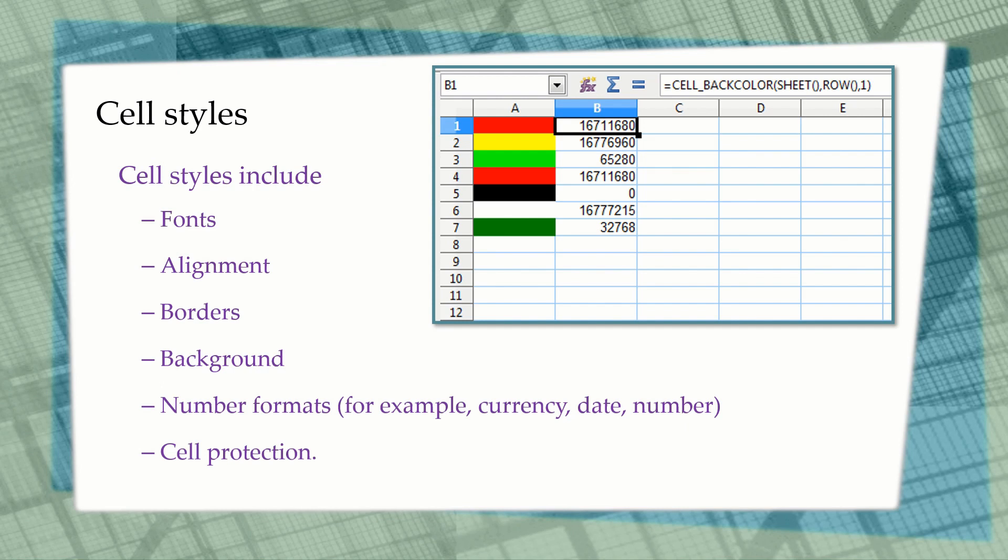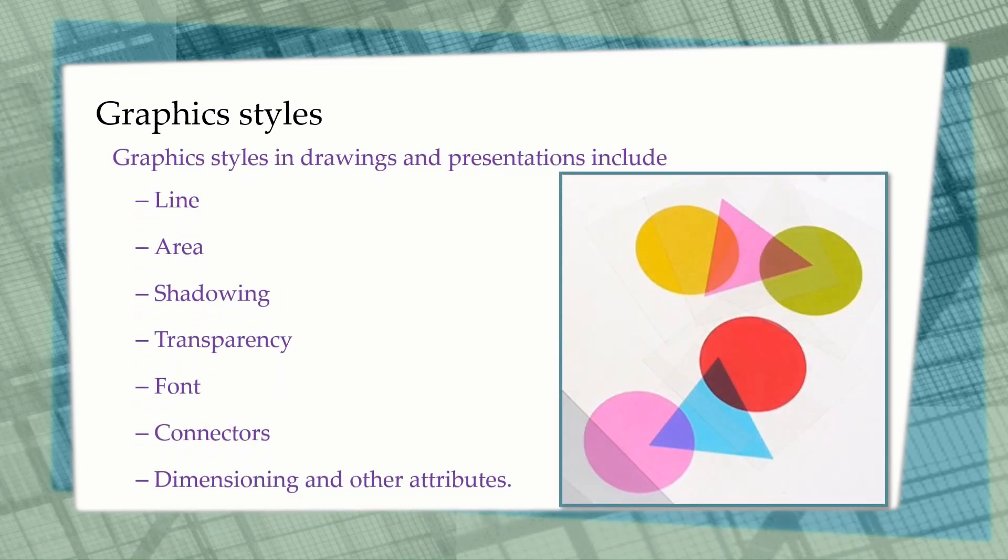The next style is the graphic style. Graphic styles are used in OpenOffice Draw and OpenOffice Impress, where we draw objects like lines, circles, triangles, and other shapes. Graphic styles in drawings and presentations include line, area, shadowing, transparency, font, connectors, dimensioning, and other attributes.